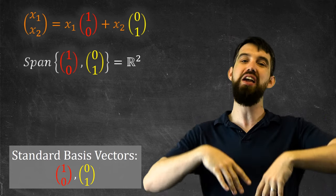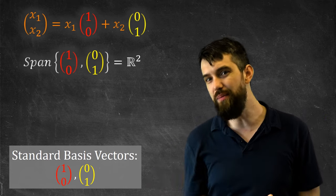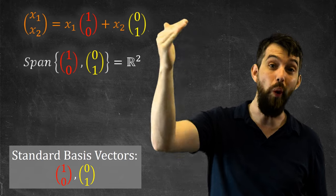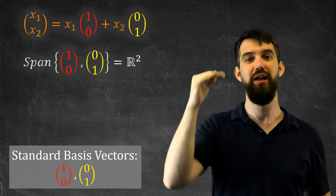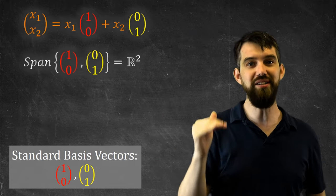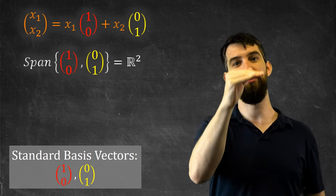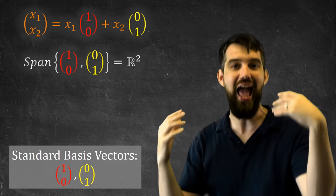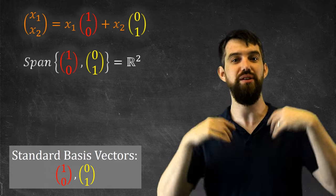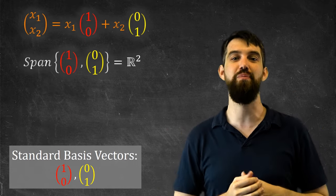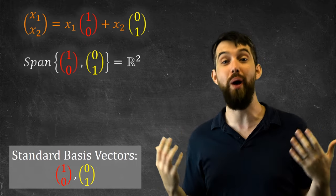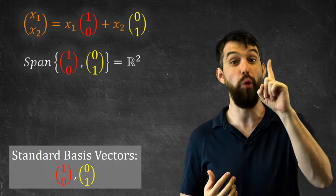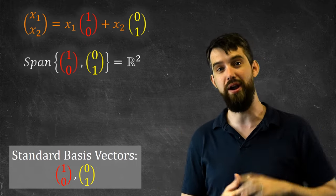By the way, if you're living in three dimensions, there are three standard basis vectors: (1,0,0), (0,1,0), and (0,0,1). If you're living in n dimensions, then there are n standard basis vectors — all the ways you can have a vector with zeros everywhere and a single one in one position.